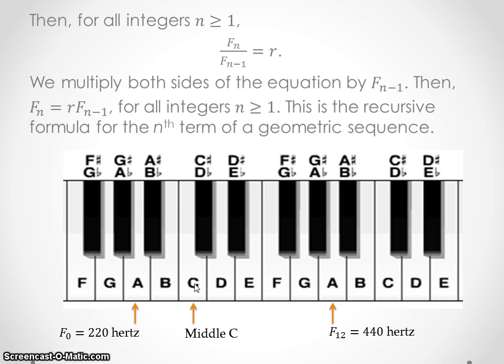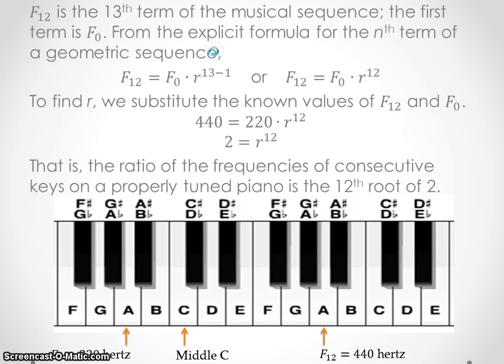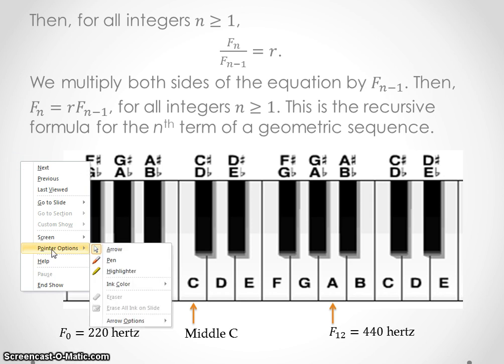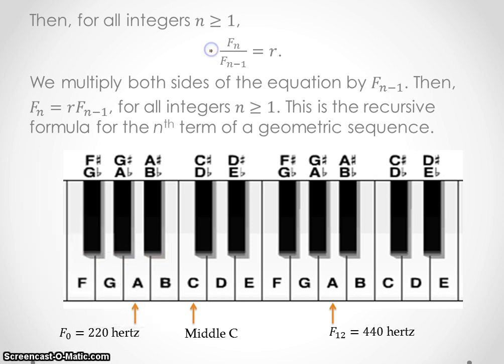And it would be the same for any of these. I could do the same thing with C and B. I could say C divided by B is going to give us this ratio R. I could do E and E flat, and that's going to give us R. All right, so any key and the key below it will give us this ratio. So then, if we use this equation, we multiply both sides of the equation by F_(n-1). We're going to multiply this by F_(n-1). And that means, of course, what we do to the left, we have to do to the right. So then we have F_(n-1) over here. What happens is these cancel, and I'm left with just F_n equals R times F_(n-1).